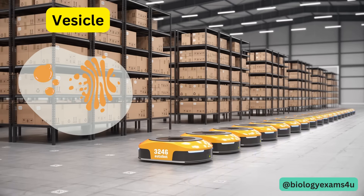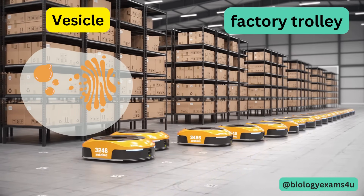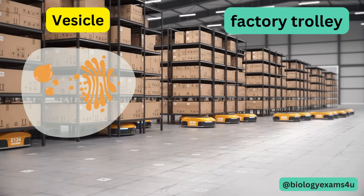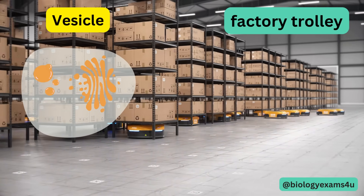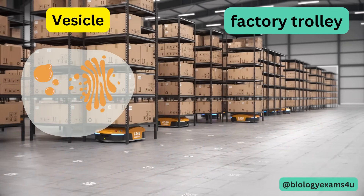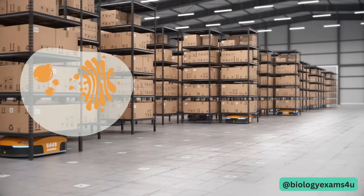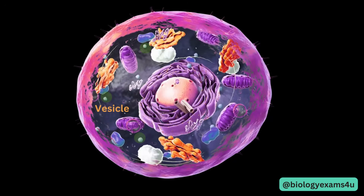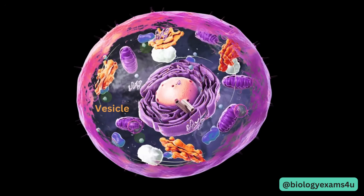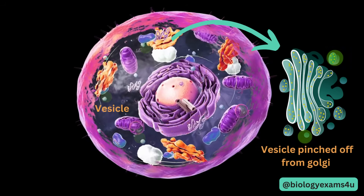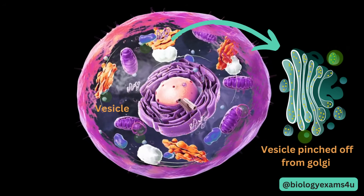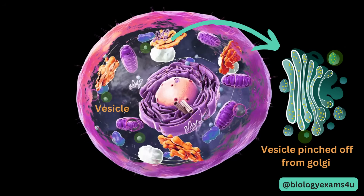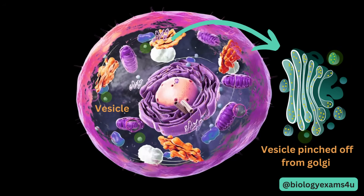A vesicle is similar to factory trolleys, which transport packaged products to various parts of a factory for shipment. Proteins are packaged in vesicles that are pinched off from the Golgi apparatus and transported to specific locations within the cell or outside of the cell.